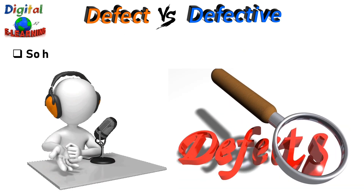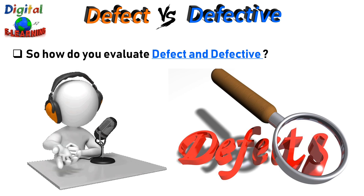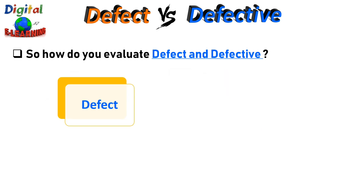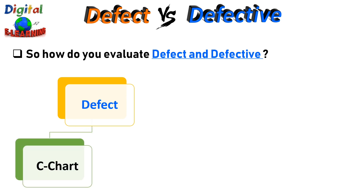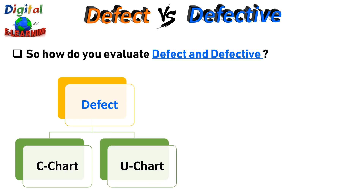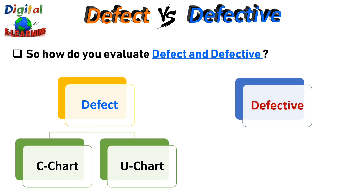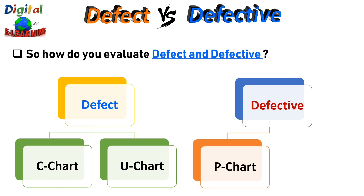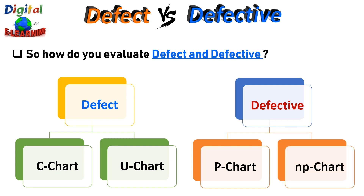So how do you evaluate defects and defectives? For defects, we use the Poisson distribution probability model, with two chart types: C-type control charts for constant sample size, and U-type control charts for variable sample size. For defectives, we use the binomial distribution probability model, with P charts for variable sample size and NP charts for constant sample size.